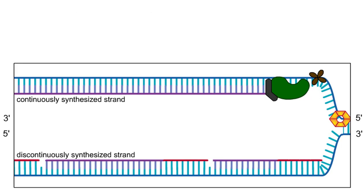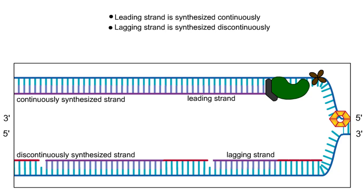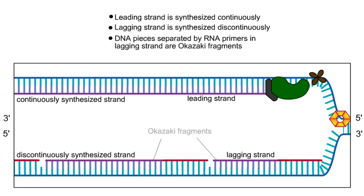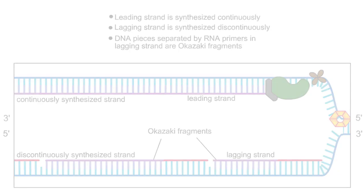The continuously synthesized strand is known as the leading strand, while the strand that is synthesized in short pieces is known as the lagging strand. The short stretches of DNA that make up the lagging strand are known as Okazaki fragments.